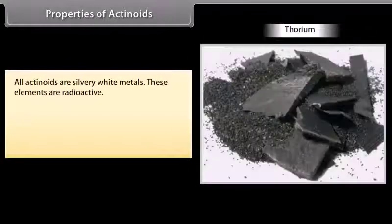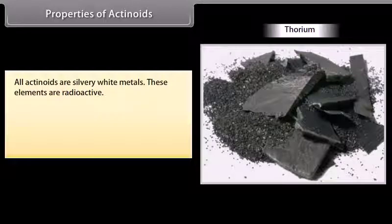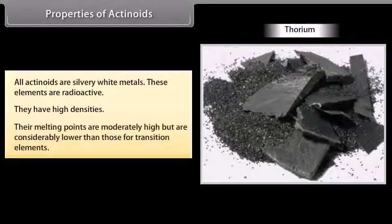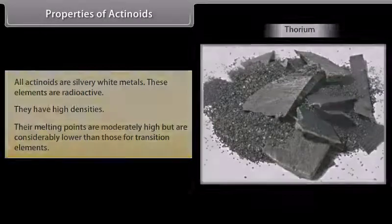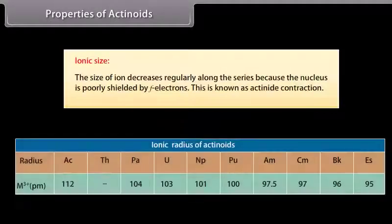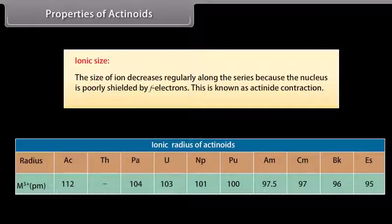All actinoids are silvery white metals and are radioactive. After uranium, all elements are man-made. They have high densities; their melting points are moderately high but considerably lower than those for transition elements. The size of ions decreases regularly along the series because the nucleus is poorly shielded by F-electrons. This is known as actinoid contraction.